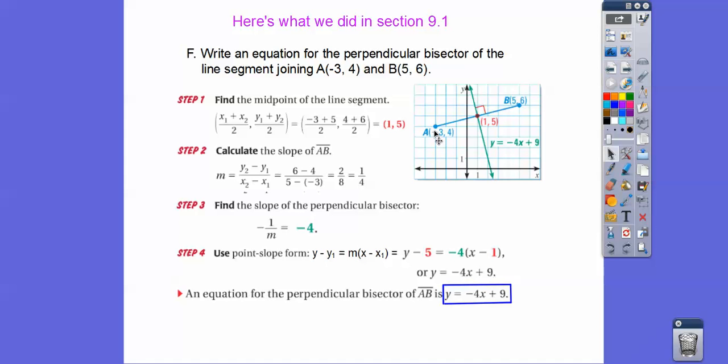So here we had this segment here with these two endpoints. And we found the midpoint using the midpoint formula. And then we found the slope of this line. So the slope of this line is y2 minus y1 over x2 minus x1.